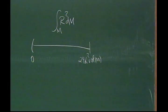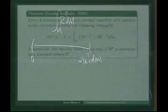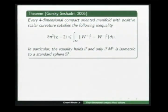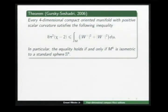A partial proof was given by Li Ma in 2006: if we have a four-dimensional compact Ricci soliton such that the integral of scalar curvature squared lies in the interval (0, 24λ²Vol(M)), then the Hitchin-Thorpe inequality holds. On the other hand, Gursky, and independently Harish Seshadri, proved that every four-dimensional compact oriented manifold with positive scalar curvature satisfies a certain inequality involving the Euler characteristic. Since our soliton has positive scalar curvature, equality holds if and only if M is isometric to a standard sphere.